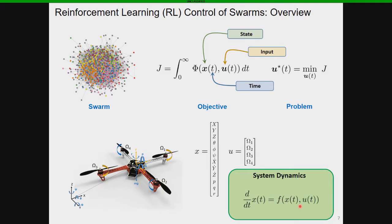How the control input influences the system state is given by system dynamics. In general, it looks like: dX/dt or X-dot equals F of X and U, where F is a function denoting how the current state and control input influence the rate of change of the state. Given the current state and input, one can use these dynamics to predict future states. The issue is that you typically don't know this function F — you don't know how your control influences your states — and there are often external disturbances and unknown forces not captured by your model. Finding an optimal input or policy given that you don't know the precise mapping F is the problem of reinforcement learning control.